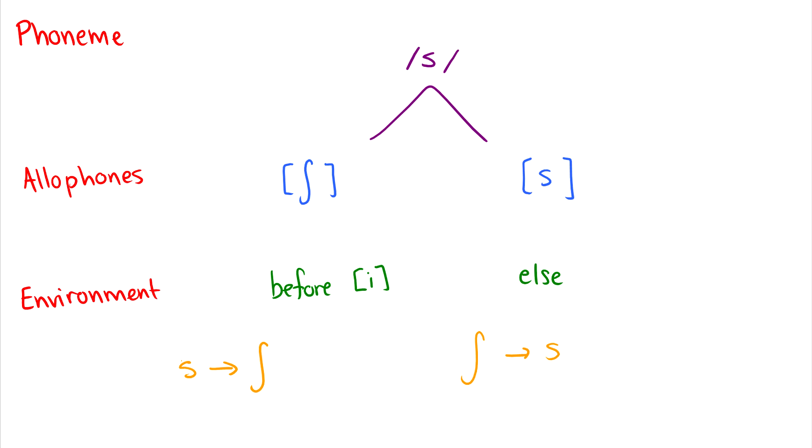Okay, so the rule. The rule will state that the phoneme s will be realized as the alveopalatal sh. When? Before the sound i. And you might be thinking, hold on a second, why aren't we writing this with features?